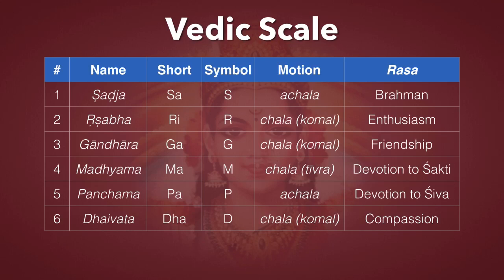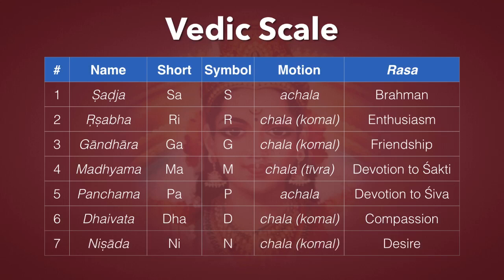And finally, there's Nishada, or Ni. Symbol is N, and it's Chala. It can be natural or Komal. And it expresses desire.